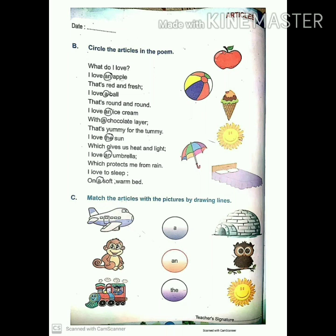'That's yummy for the tummy. I love the sun' — circle 'the' — 'which gives us heat and light. I love an umbrella' — circle 'an' — 'which protects me from rain. I love to sleep on a soft warm bed' — circle 'a'.